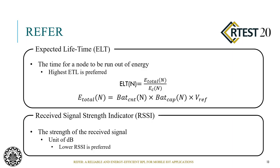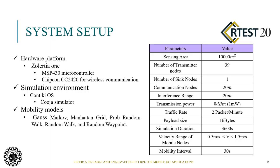RSSI is in units of dBm and the candidate parent with lower RSSI is preferred. To evaluate Prefair, we utilized the Cooja simulator with the Contiki operating system. Mobility models used are Gauss-Markov, Manhattan Grid, Pseudo Random Walk, Random Walk, and Random Waypoint. The rest of the simulation configurations — such as sensing area, number of transmitter nodes, number of sink nodes, etc. — are listed in the table.